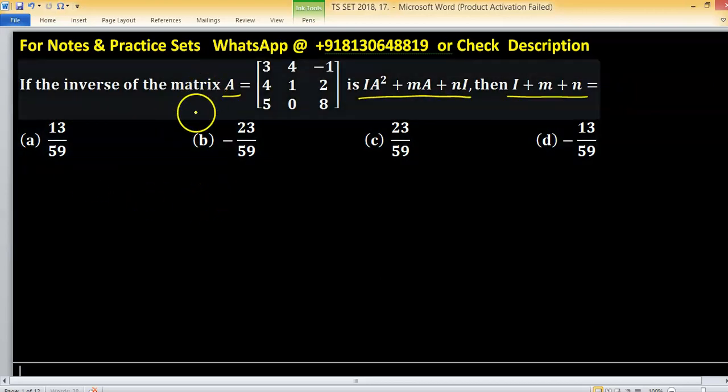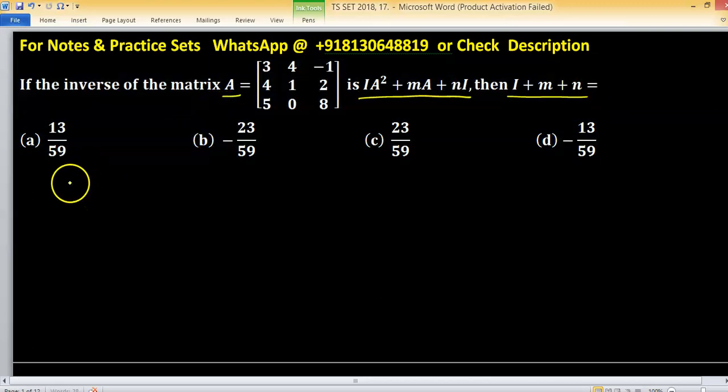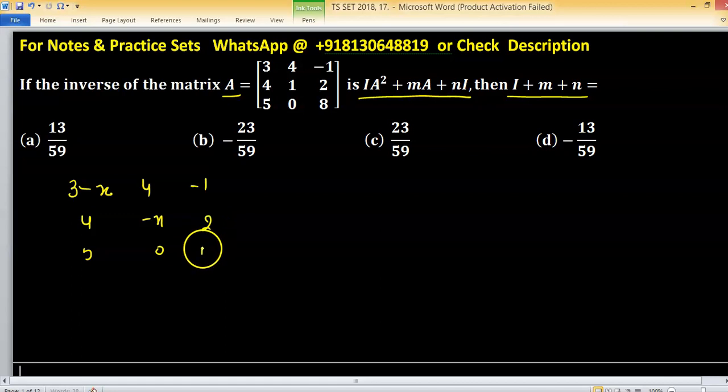So first try to find the characteristic polynomial for matrix A. You can expand 3 minus x, 4, 5, 4, 1 minus x, 0, minus 1, 2, 8 minus x. Find this matrix.